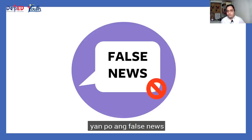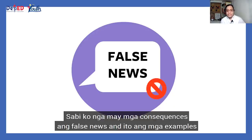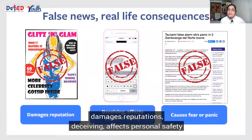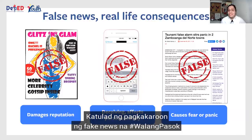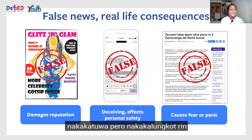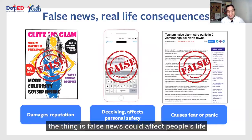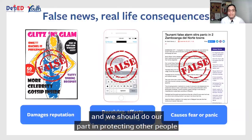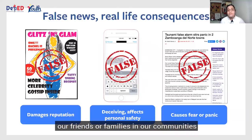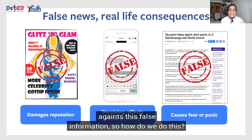False news is dangerous. Determining fact from opinion is a bit easy, but sometimes people present their opinions as facts. Or worse, some people would add details that aren't necessarily true and present them as legitimate information — yan po ang false news. May mga consequences ang false news: damage reputations, deceiving, affects personal safety, and causes fear or panic. Katulad ng pagkakaroon ng fake news na hashtag walang pasok — nakakatawa, pero nakakalungkot rin. The thing is, false news could affect people's lives. In reality, these false pieces of information have real life consequences. And we should do our part in protecting other people, our friends, our families, and our communities against these false information.